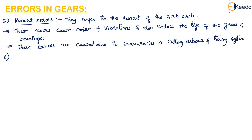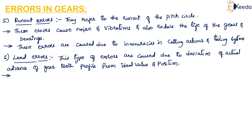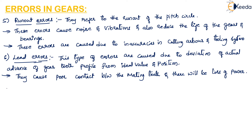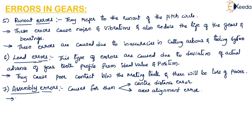The sixth type is lead errors, caused by the deviation of the actual advance of the gear tooth profile from the ideal value or position. When lead errors are present, they cause poor contact between the mating teeth and thereby result in loss of power. The seventh and last type is assembly errors. The causes of assembly errors are either center distance error or axis alignment error. An error in the center distance between two engaging gears can result in backlash or jamming of the gears.